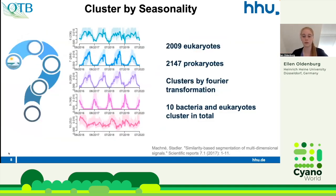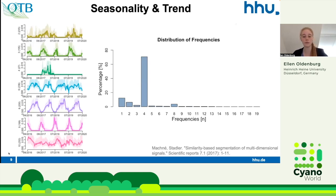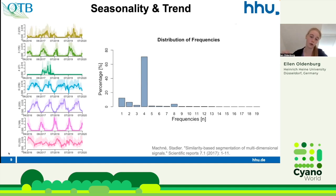What do we want to do with this dataset? We want to know if there are differences, anomalies, trends, and oscillations. We have created clusters of organisms with similar behavior using the Fourier transformation. In the first step, we clustered all time series data spanning the full years, which allows us to identify all species that share a common dynamic in each year. On the y-axis is the normalized relative abundance, on the x-axis the time, and the numbers in brackets indicate the number of organisms in each cluster.